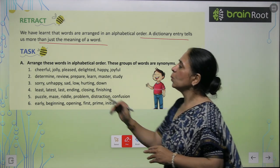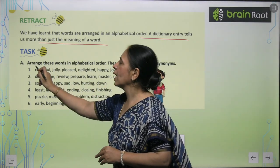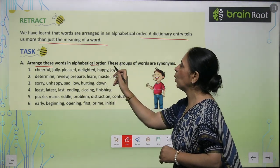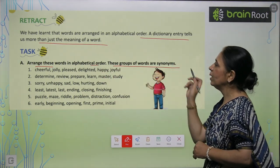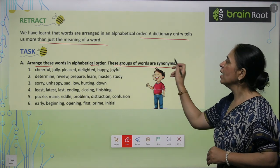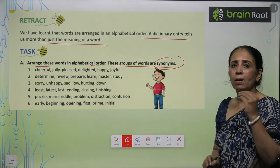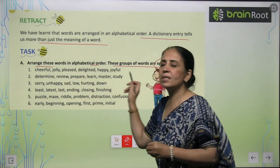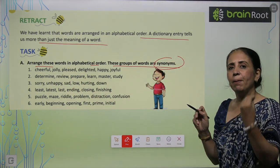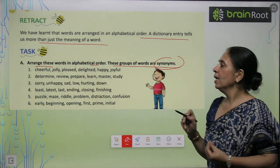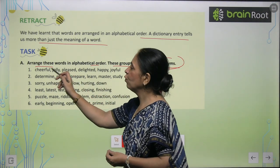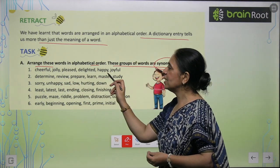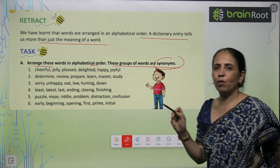So let's start with the task. We have to arrange these words in alphabetical order. This group of words are synonyms. Now, synonyms means that all the words have one word meaning. You have seen here: cheerful, jolly, pleased, delighted, happy, joyful.